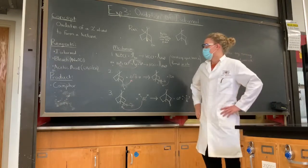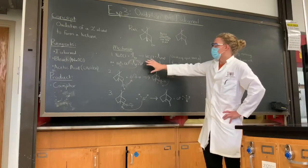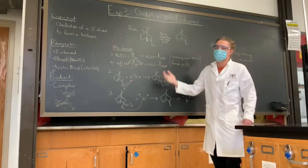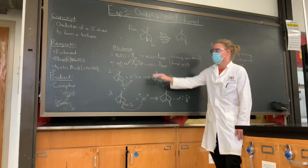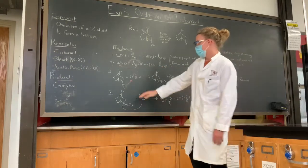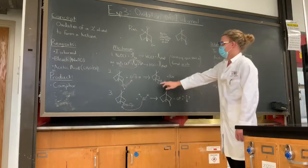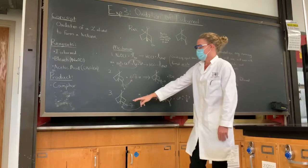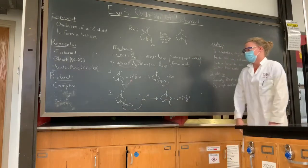The way this reaction works is the bleach and acetic acid form together HOCl, which is your actual oxidizing agent. HOCl will attack your alcohol, you're going to make this cation, which will then get a hydrogen extracted from the water, and it will be left with your ketone.